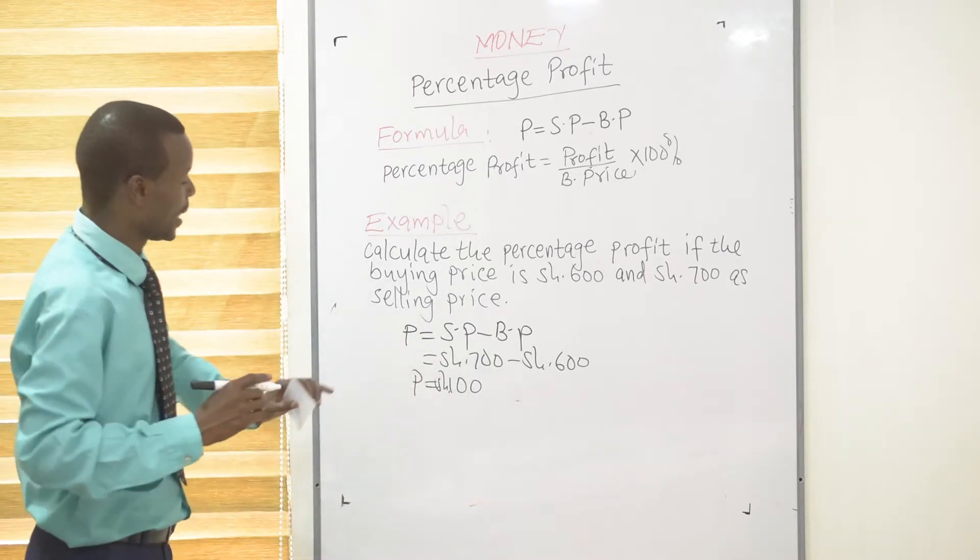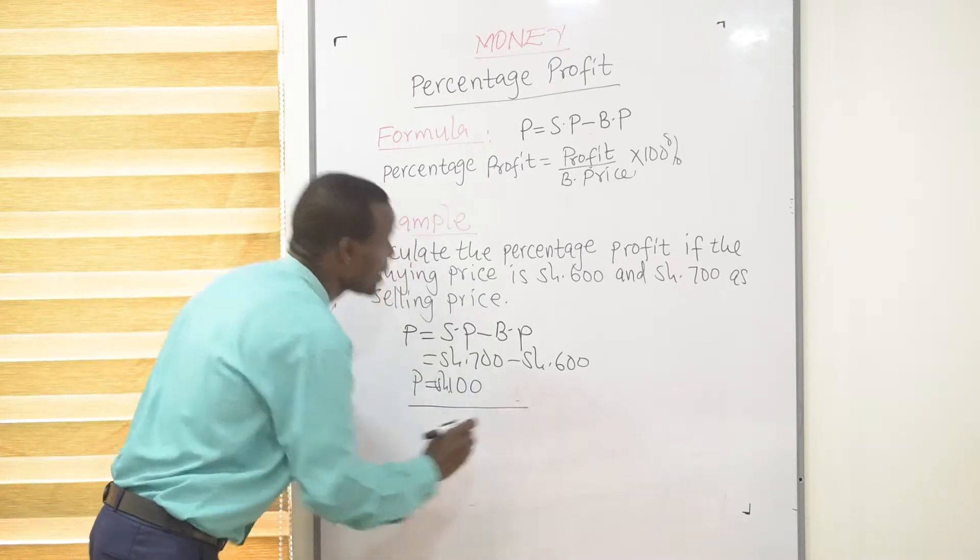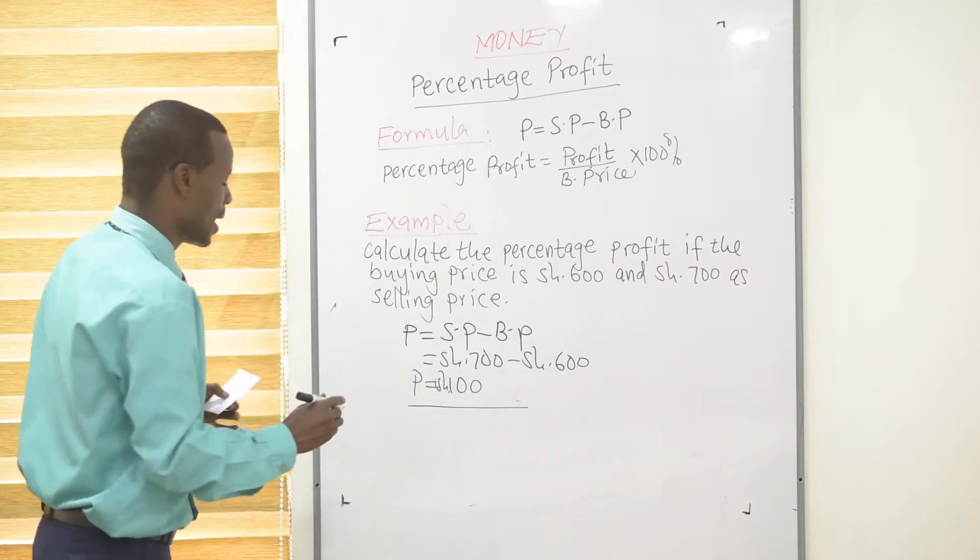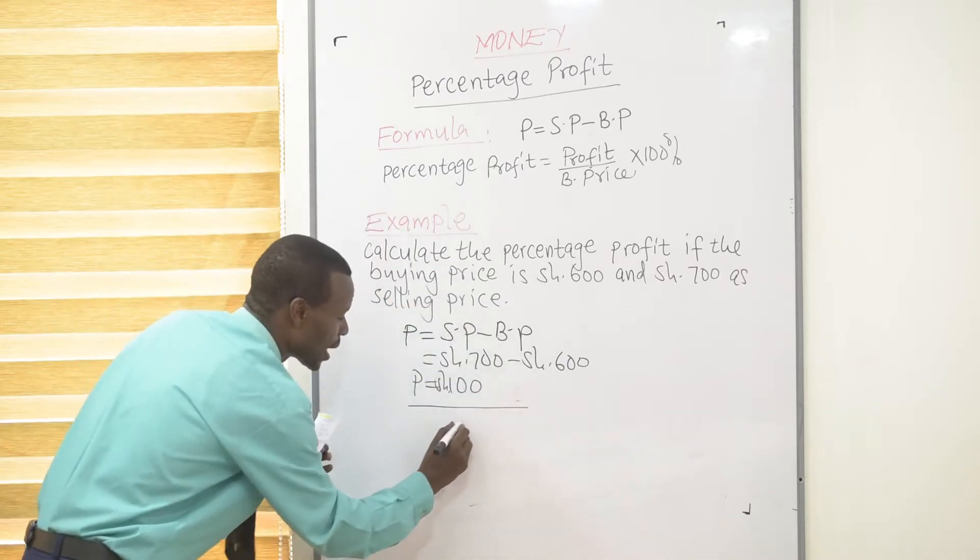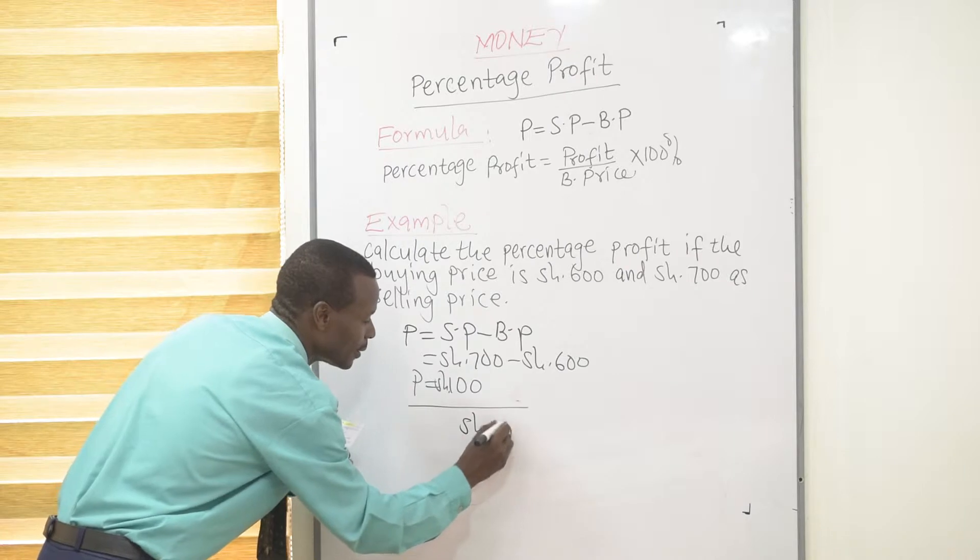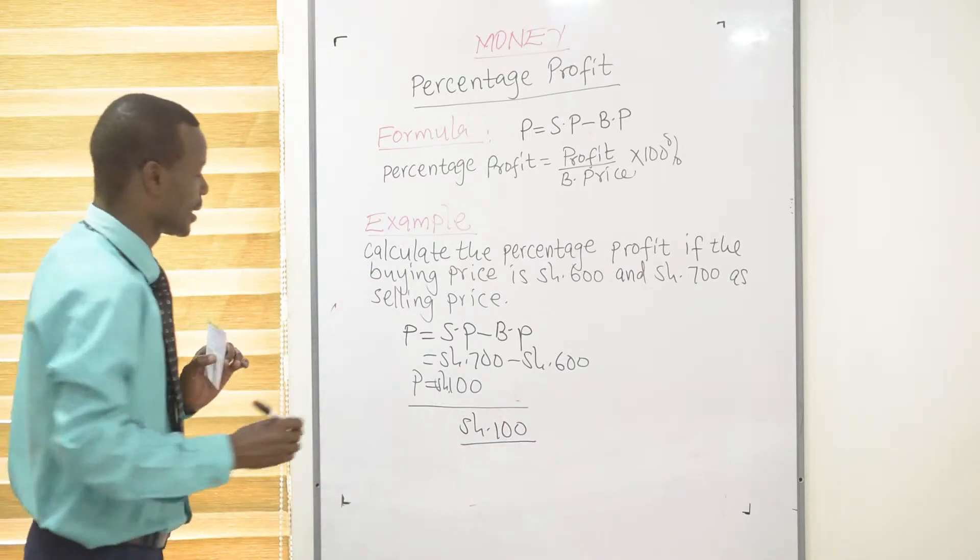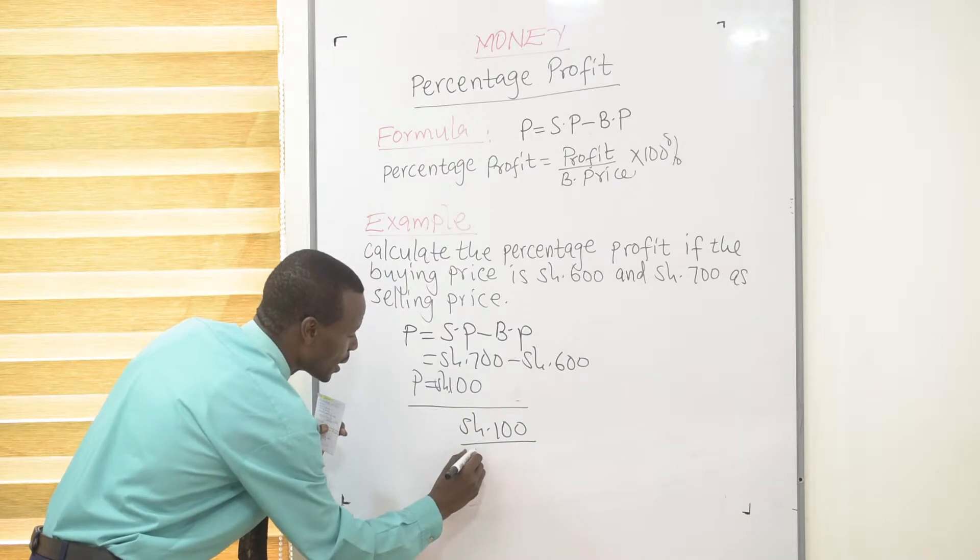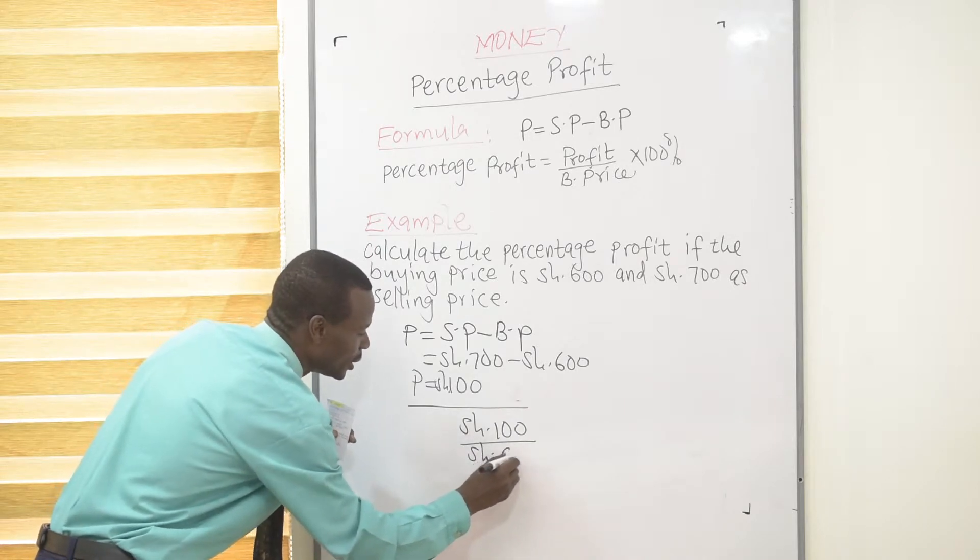Now, having got the profit, we now get the percentage profit. We take the profit, which is 100 shillings, out of the buying price, which was 600 shillings.